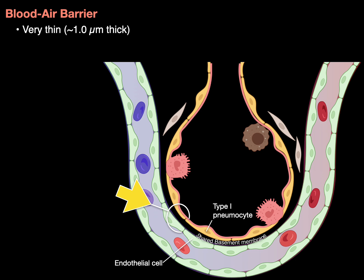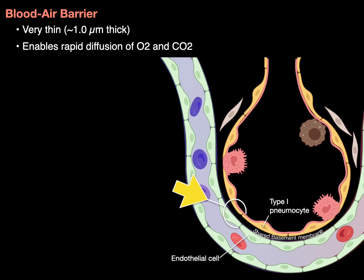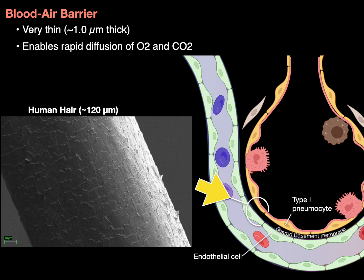Really thin — one micrometer thin. That's what allows the rapid diffusion of gases. For comparison, a human hair in electron microscopy is 120 micrometers thick, and the blood-air barrier is just one micrometer thick.